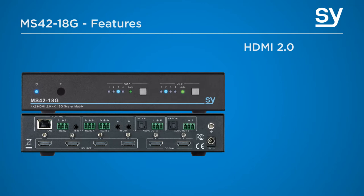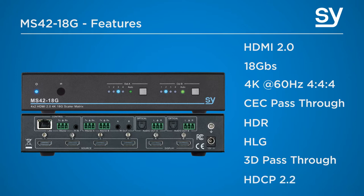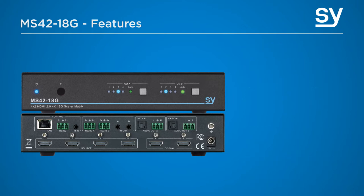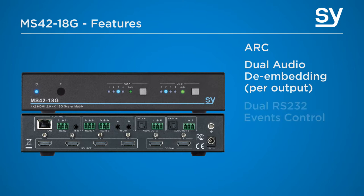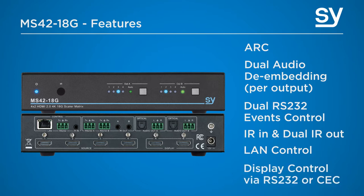Let's start with the basics. It is an HDMI 2 device which means that it will pass video signals at full 18 gig bandwidth. That means 4K at 60Hz 4:4:4 color sampling. Each input and output supports CEC, HDR, HLG, all 3D TV formats and HDCP up to version 2.2. It also sports functions like ARC audio return channel, audio de-embedding, dual RS-232 events control, IR in and dual IR out, LAN control via a built-in web GUI, and display control via RS-232 or CEC.